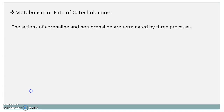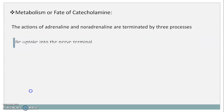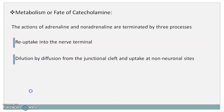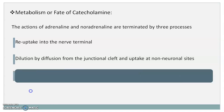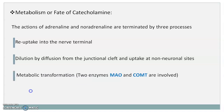About the metabolism or fate of catecholamines: the actions of adrenaline and noradrenaline are terminated by three processes. First is reuptake into the nerve terminal; second is dilution by diffusion from the junctional cleft and reuptake at non-neuronal sites; and third is metabolic transformation involving two enzymes — MAO and COMT.